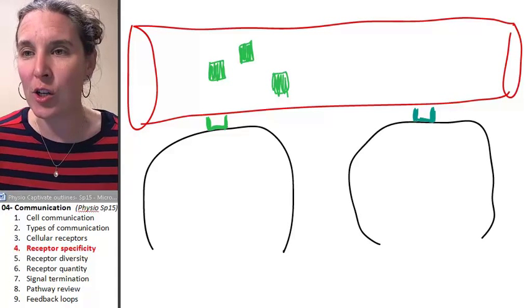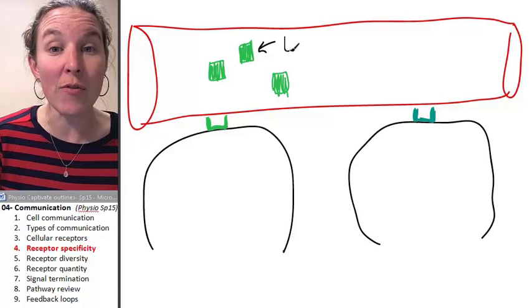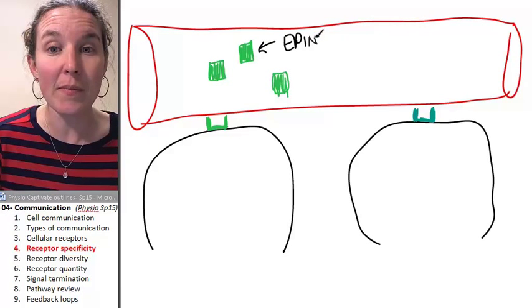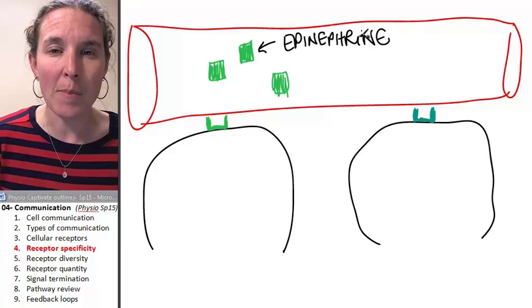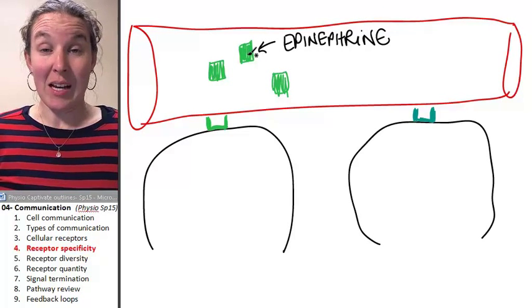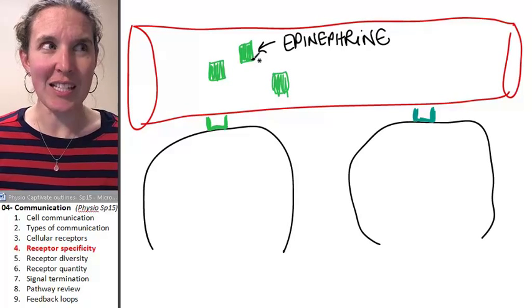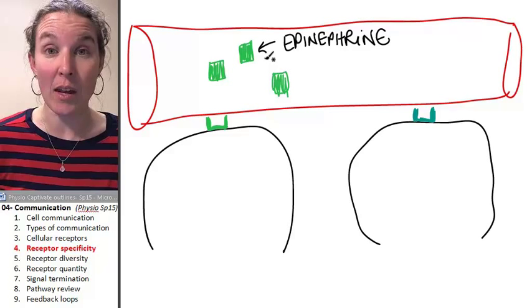And the example that I have for you is using epinephrine as my signaling molecule. Epinephrine. Epinephrine is dumped into the blood. It's basically adrenaline, and it's dumped into the blood during a sympathetic nervous response.